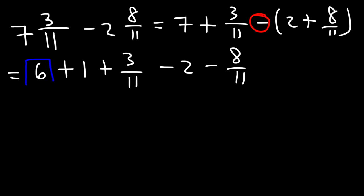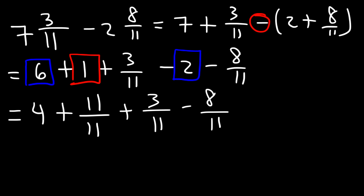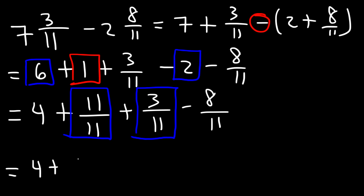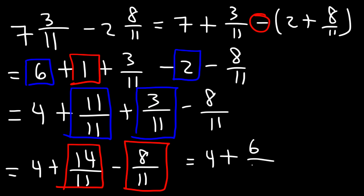Combining 6 and negative 2: 6 minus 2 is 4. Now we change the 1 to 11 over 11. Combining 11 over 11 plus 3 over 11 gives us 14 over 11. Then 14 over 11 minus 8 over 11 is 6 over 11. So our final answer is 4 and 6 over 11.